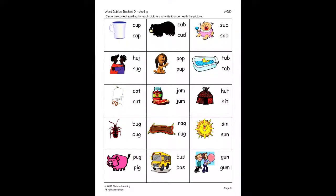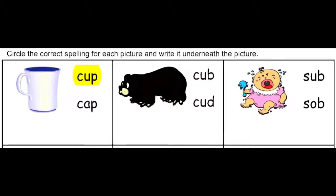In this exercise, the student will identify the picture, then choose the correct spelling of the word describing that picture. The student should ask himself, is this a picture of a cup or a cap? Once he decides which is the correct spelling, he will circle the correct word, then write that word underneath the picture.